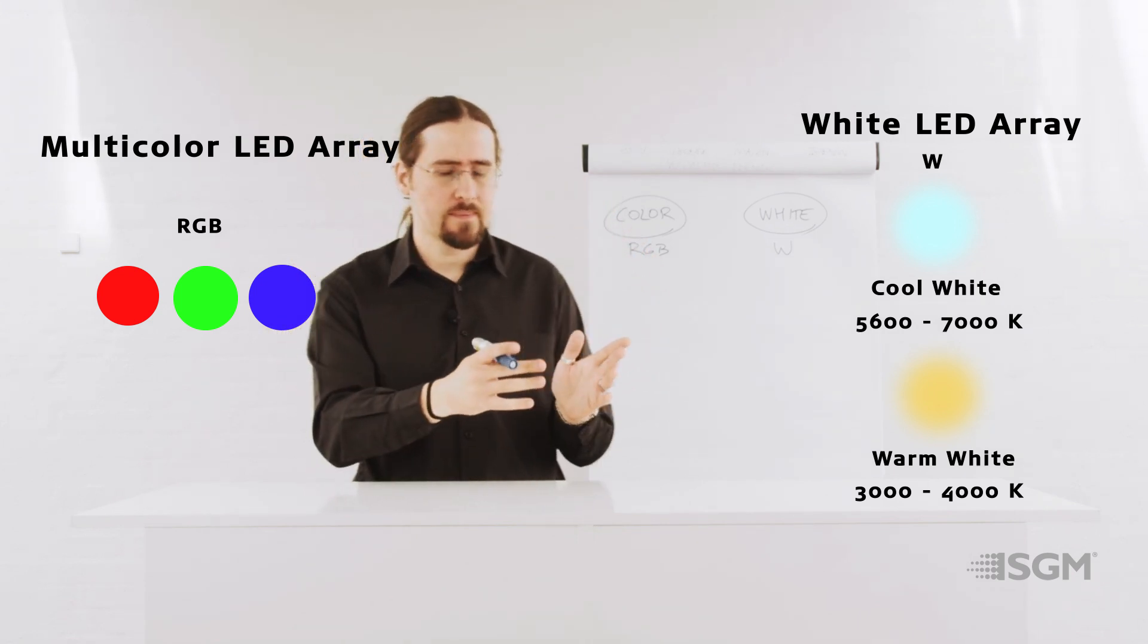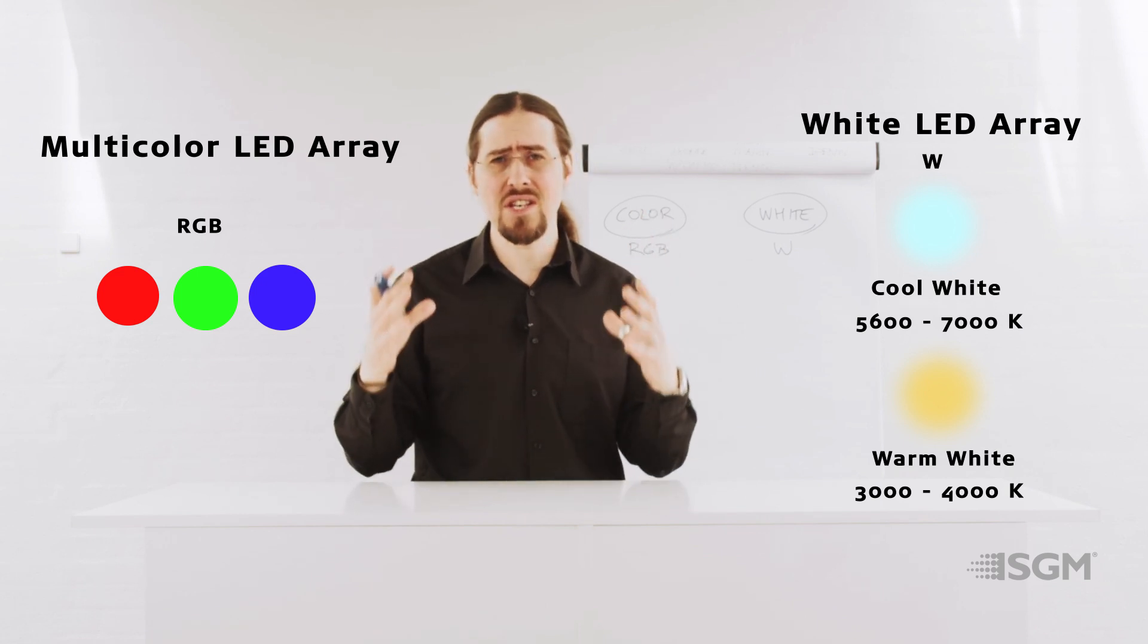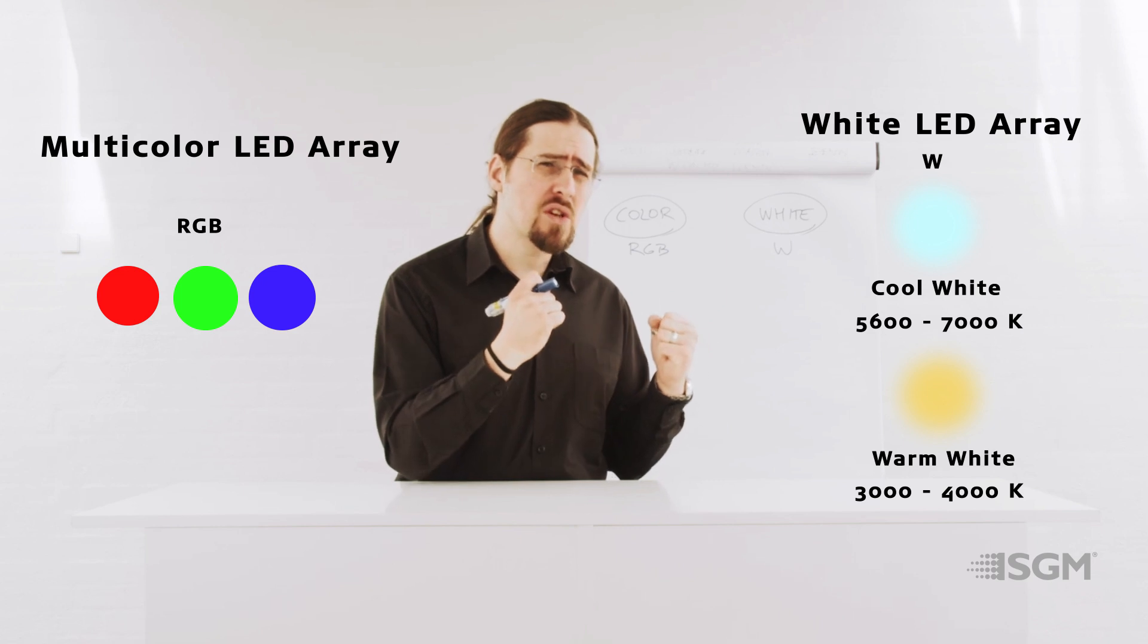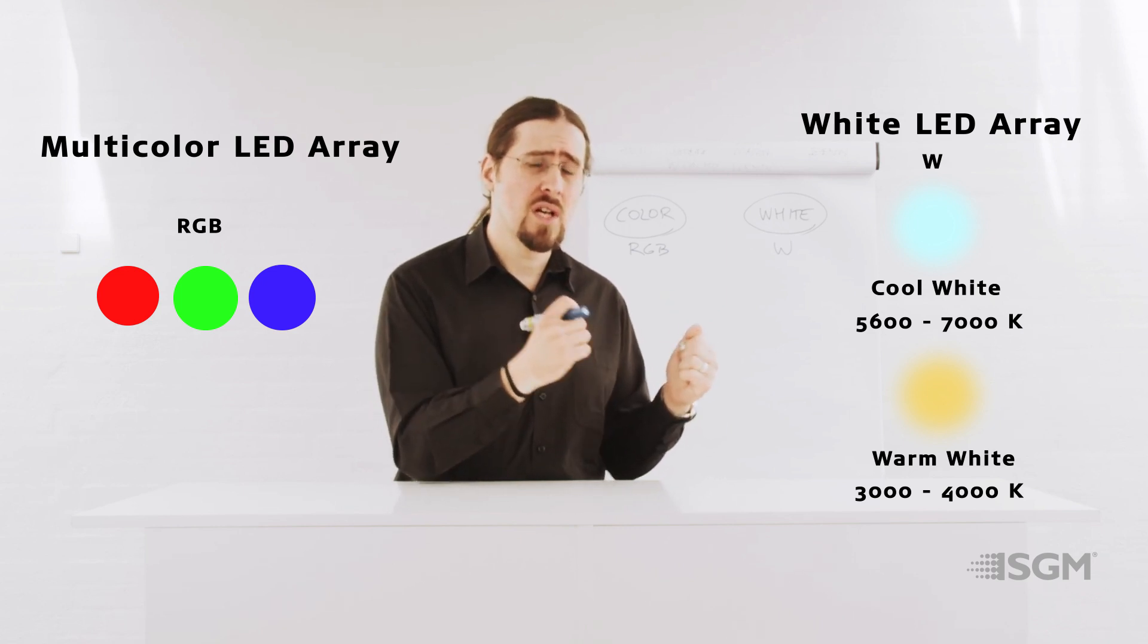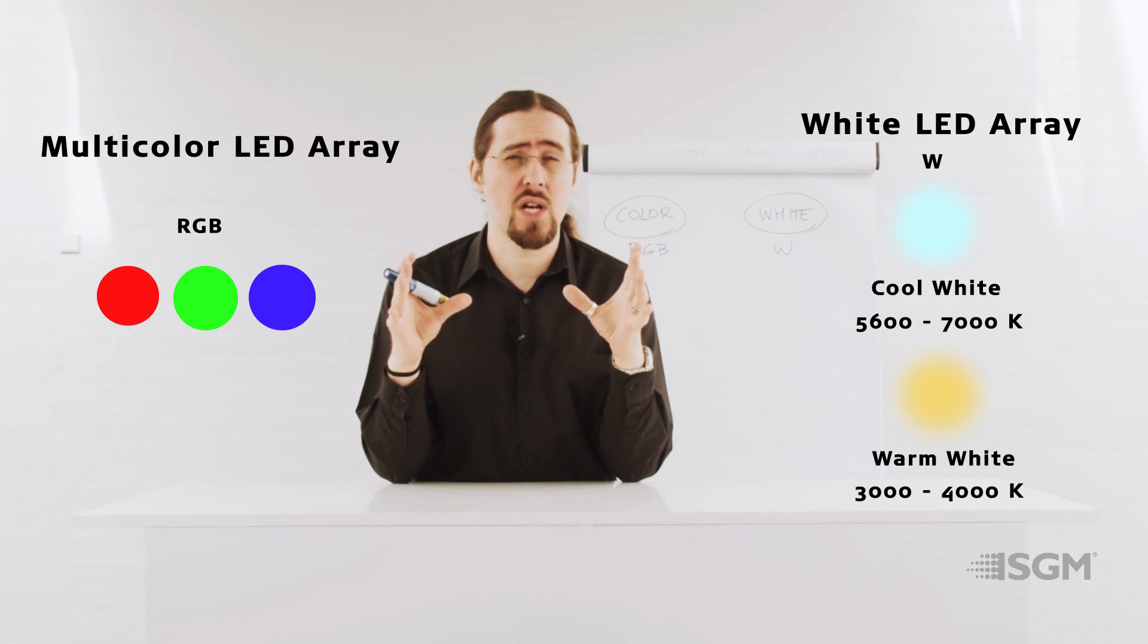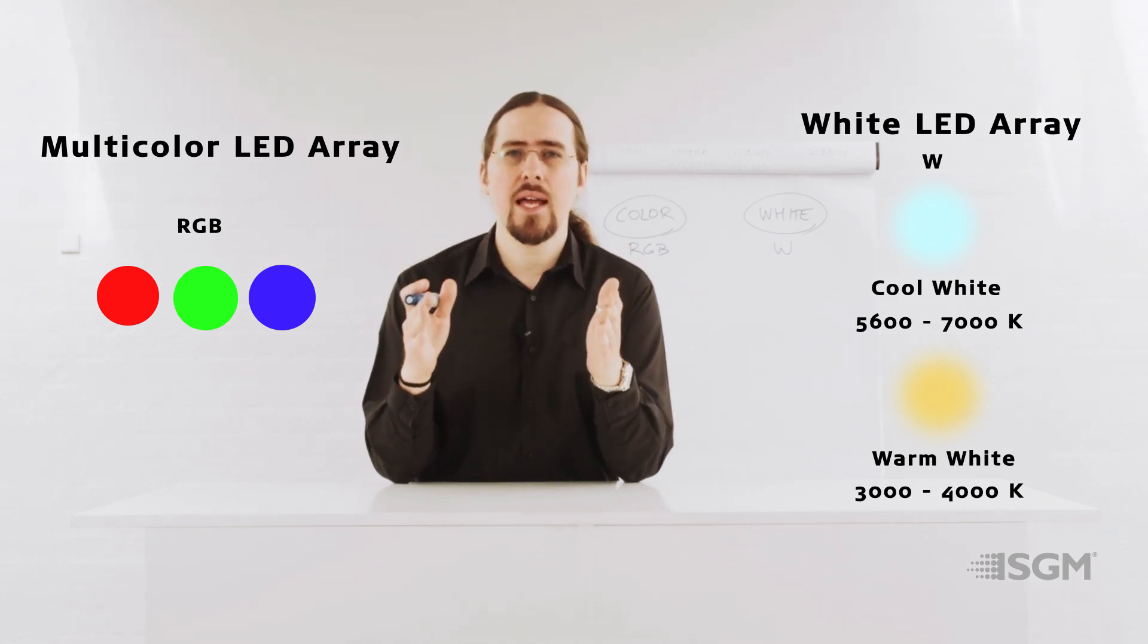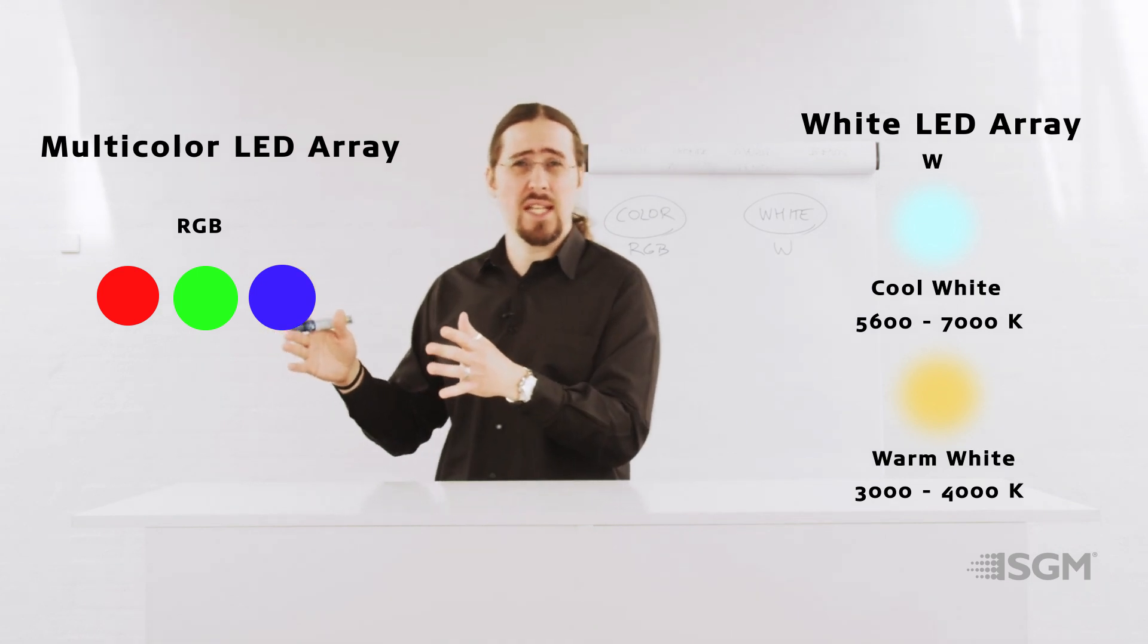But the most important thing to understand between these two different LED arrays, the color and the white one, is that there is a direct relationship between the power that you can get out of your colors, the color rendering that you have when you are trying to reproduce colors, for example in camera, and the output that you get in white.